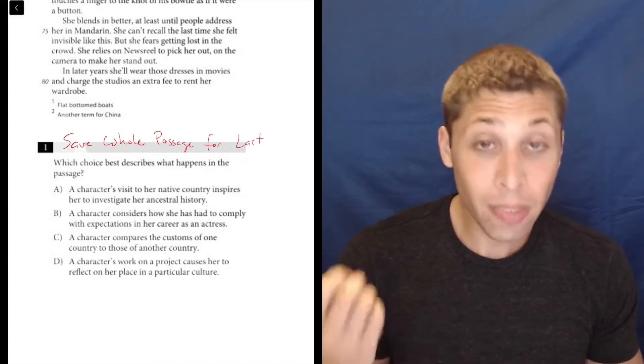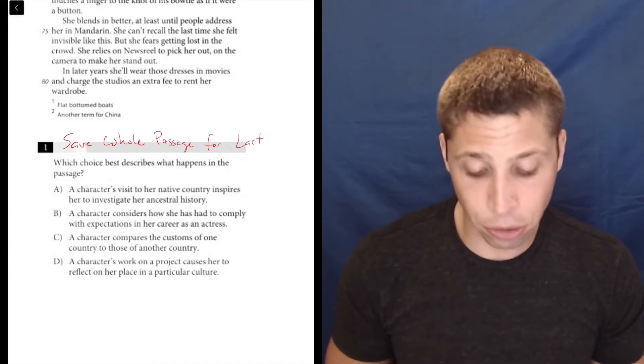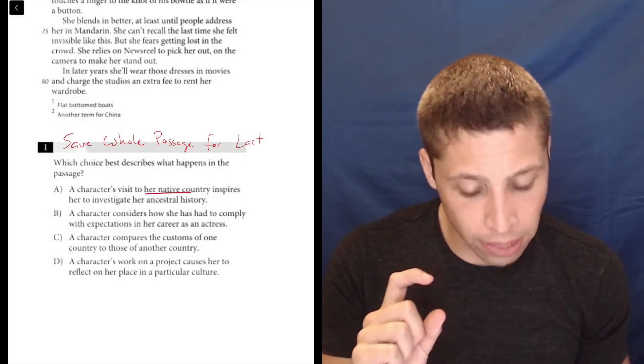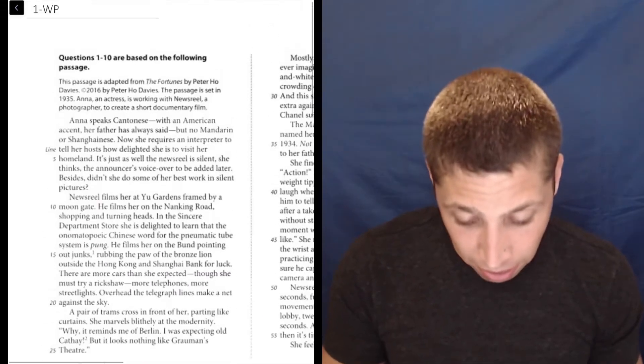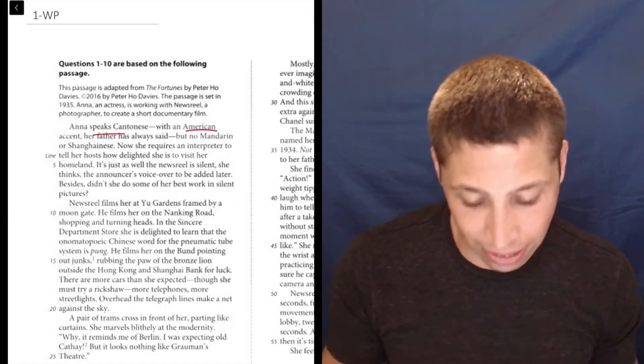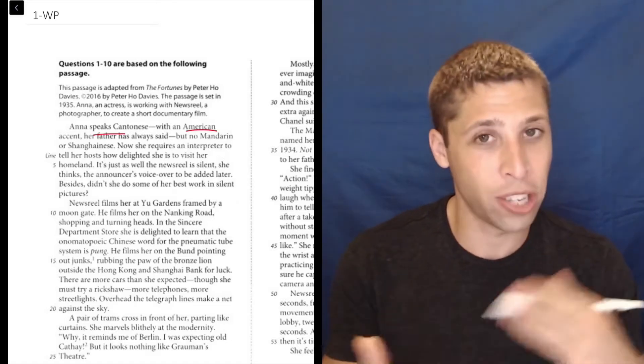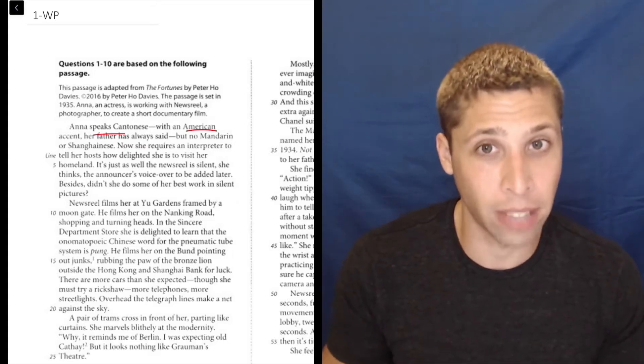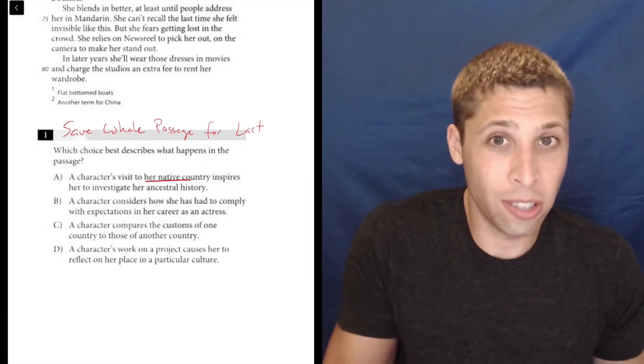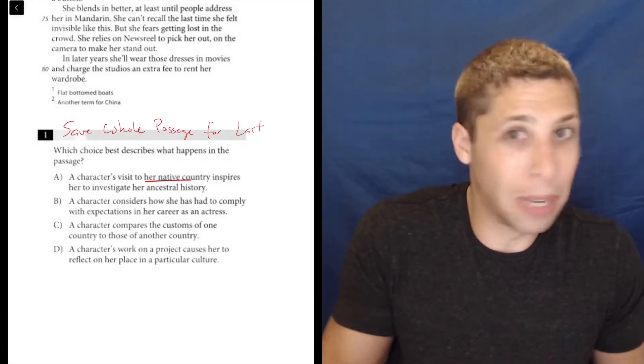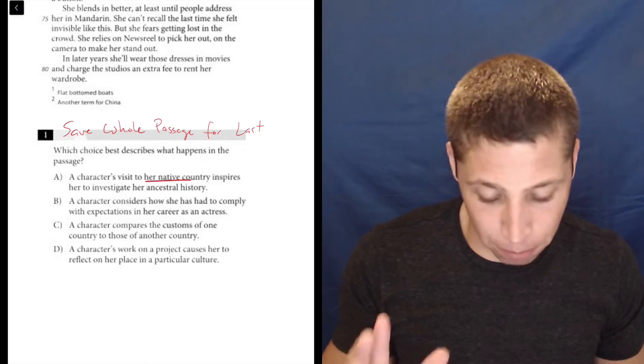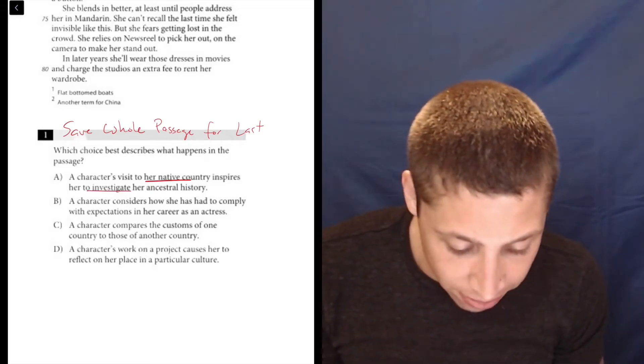So in choice A, a character's visit to her native country inspires her to investigate her ancestral history. Well, first of all, we've got to be a little careful here. Is it really her native country? She's American, right? They said that. So she speaks Cantonese with an American accent. This was really early on and throughout the passage, she has troubles. There's a lot of stuff where she doesn't speak the native language. So I don't know if this even counts that it's her native country. Like she's ethnically Chinese, but the whole passage is making clear that she's not fitting in. So I don't know. I'm a little iffy on that, but even the rest of it, investigate her ancestral history.